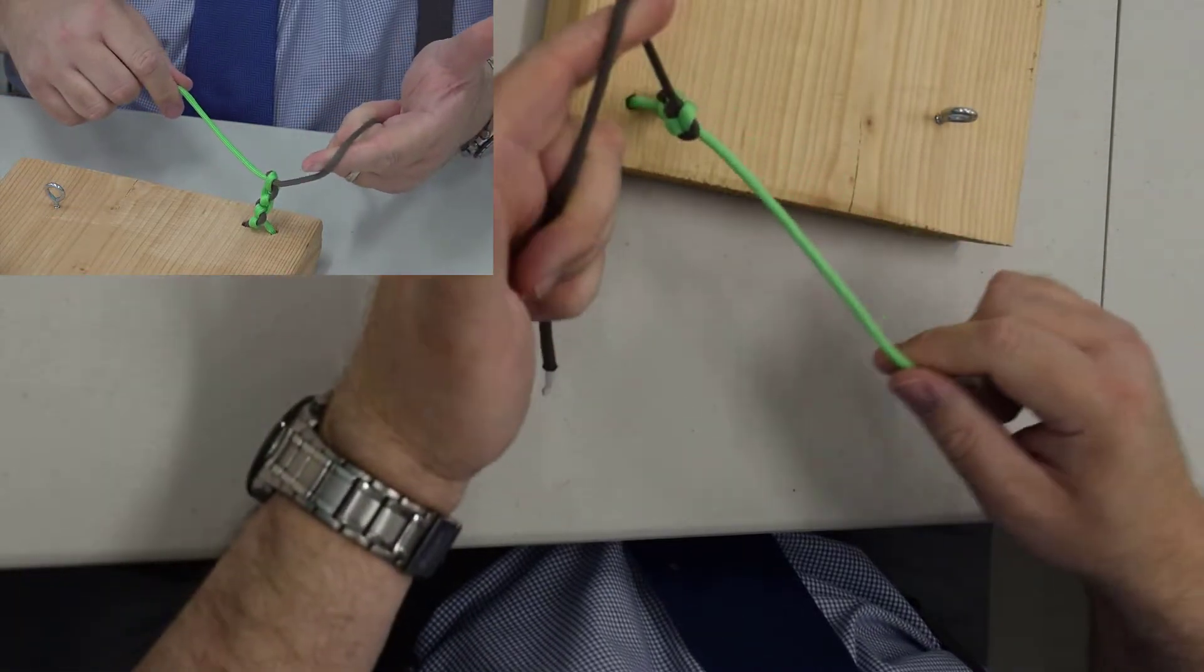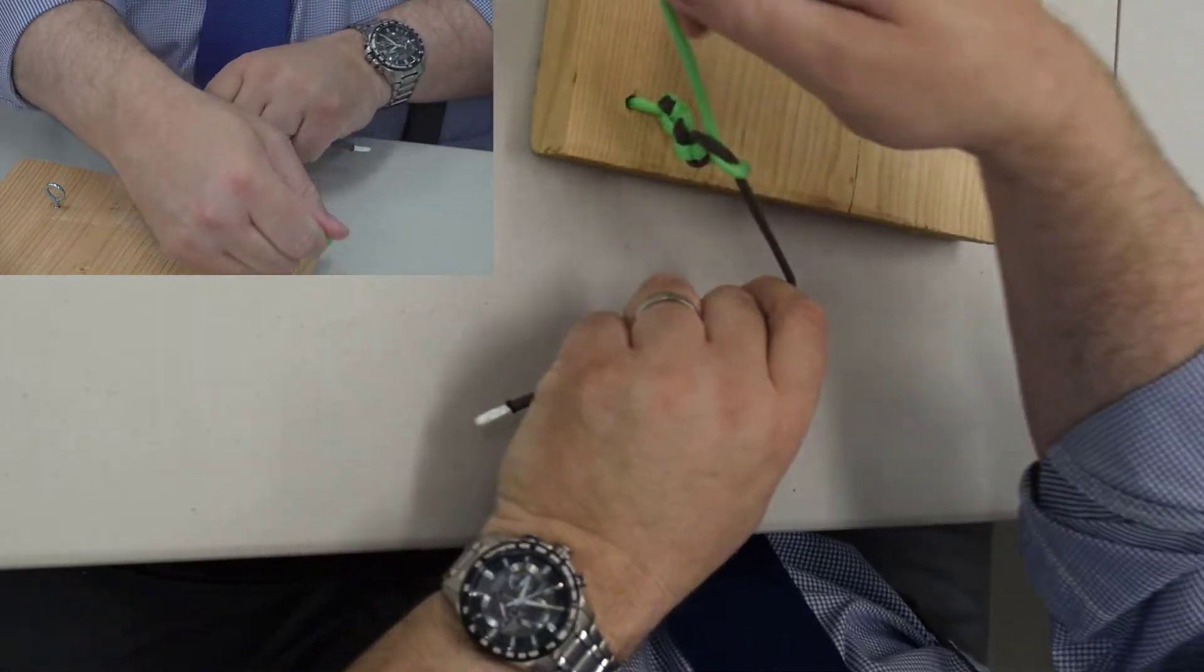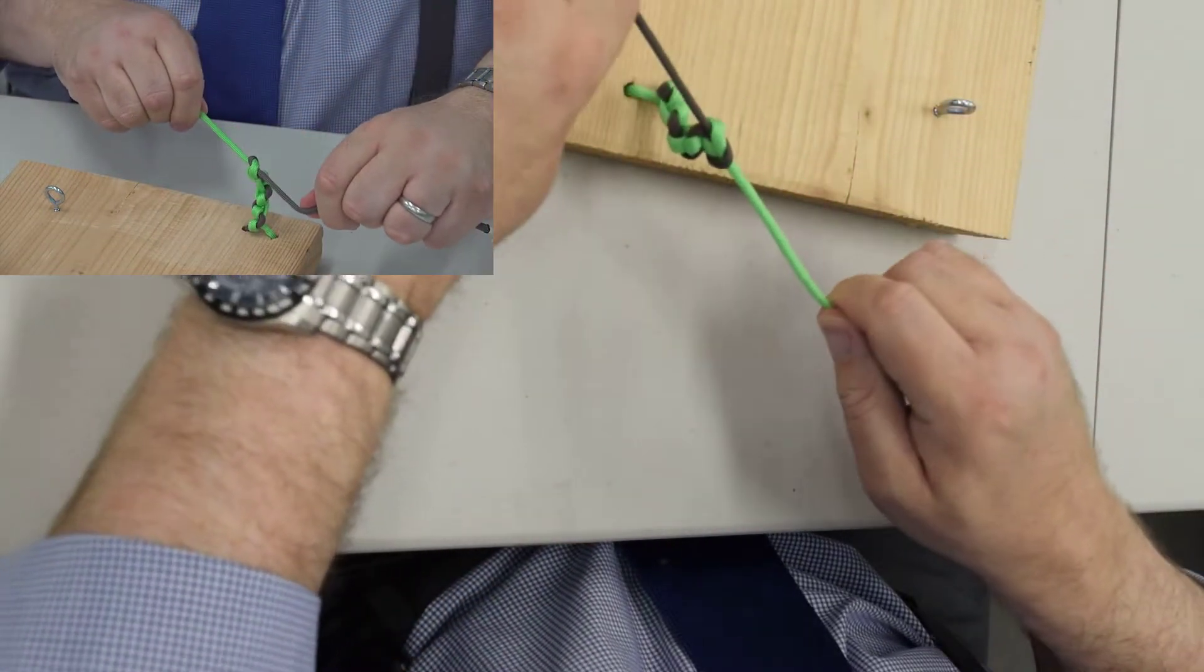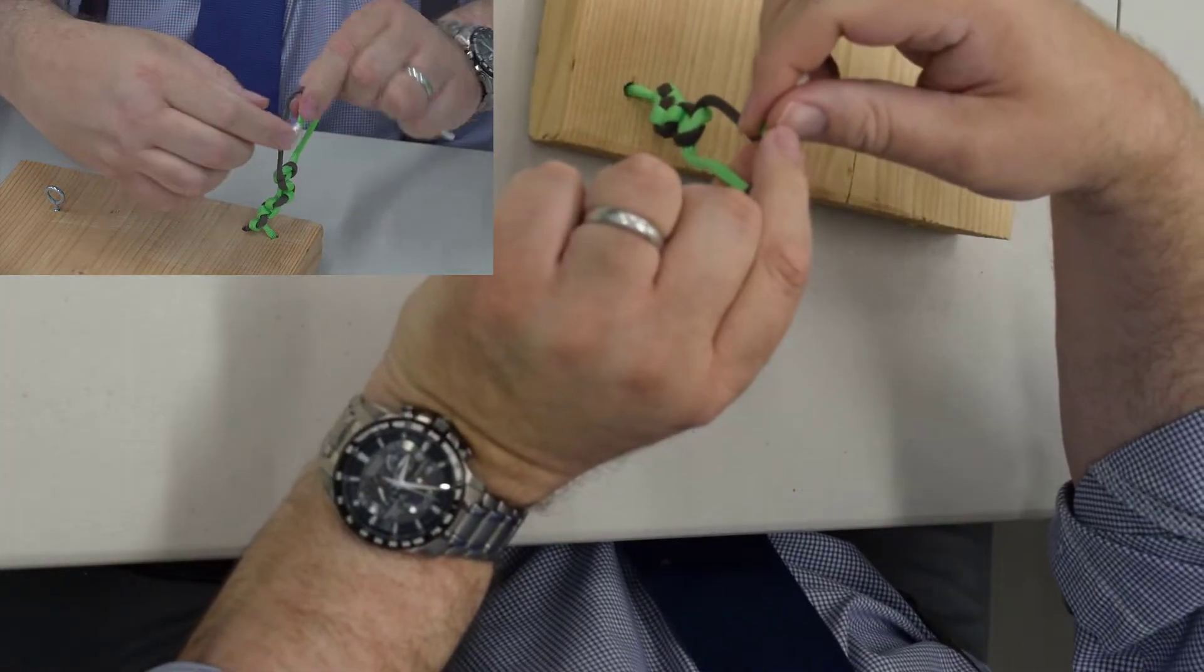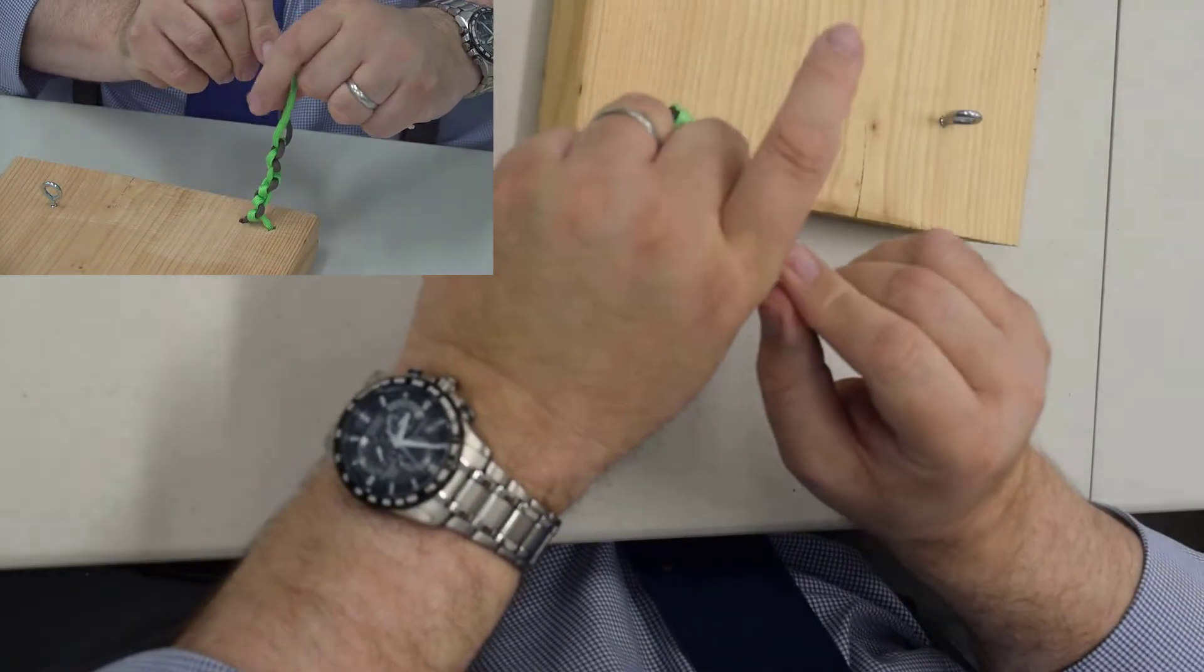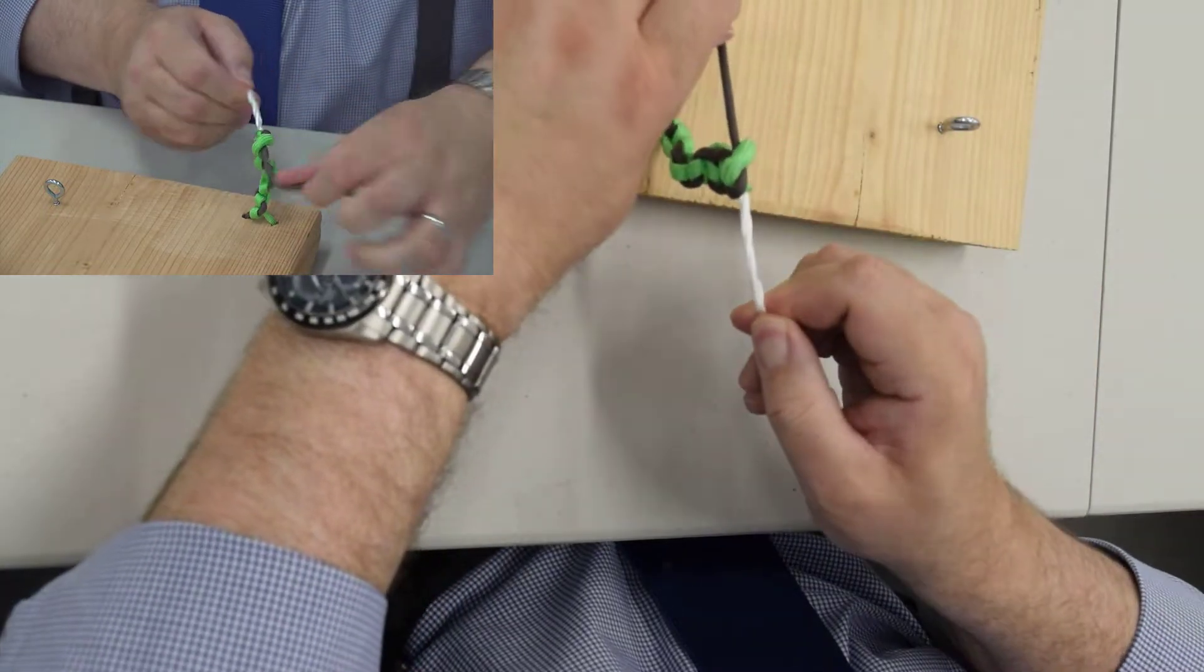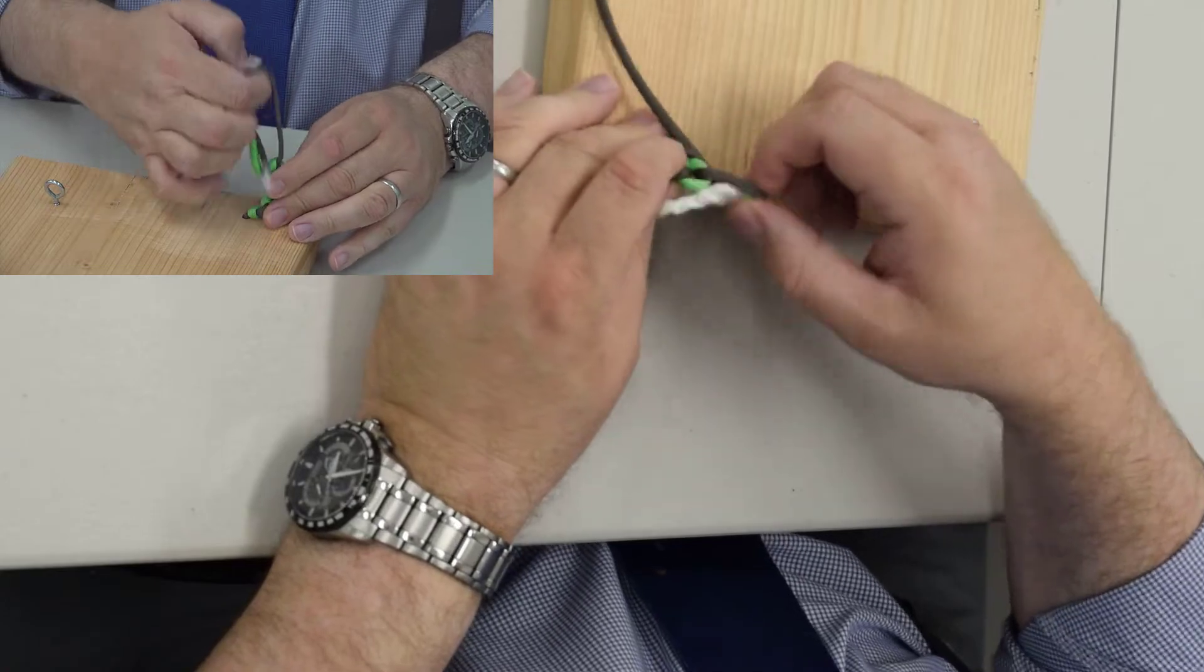So again, it's gun, gun, cross, and thumb. Gun, thumb. And yes, one of my strands is getting shorter than the other. That's to be expected. So that is a two-handed tie.